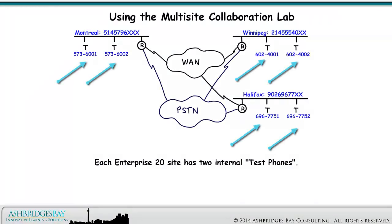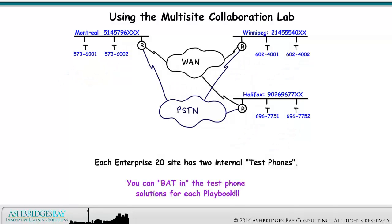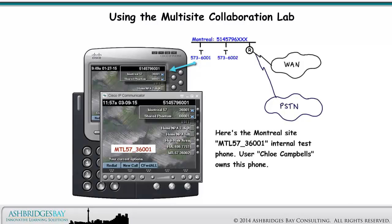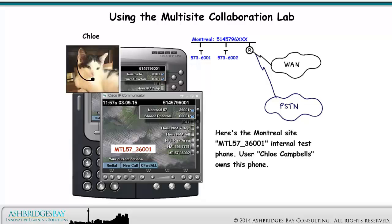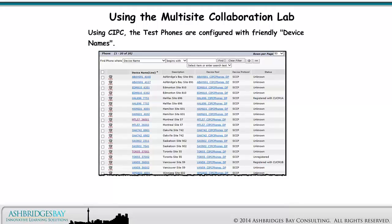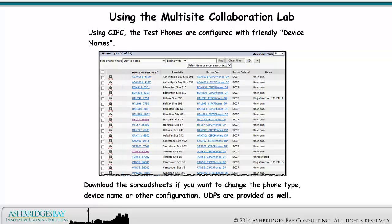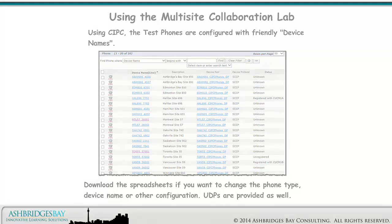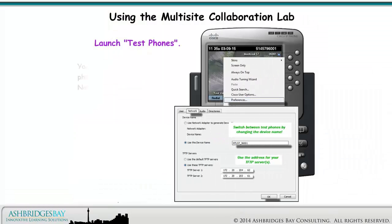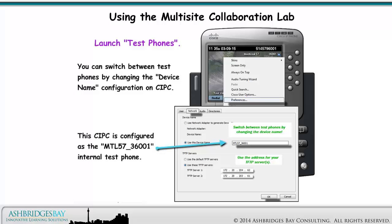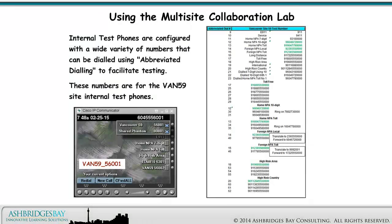Each Enterprise 20 site has two internal test phones. You can bat in the test phone solutions for each playbook. Here's the Montreal site — Montreal 57 36001 internal test phone. User Chloe Campbell owns this phone. Using CIPC, the test phones are configured with friendly device names. Download the spreadsheets if you want to change the phone type, device name, or other configuration. UDPs are provided as well. You can switch between test phones by changing the device name configuration on CIPC. Internal test phones are configured with a wide variety of numbers that can be dialed using abbreviated dialing to facilitate testing.